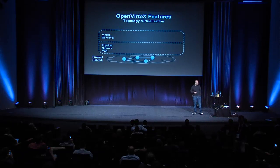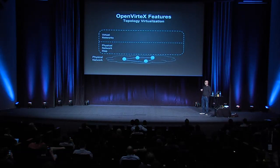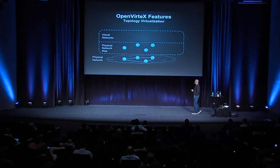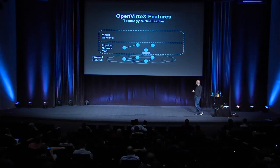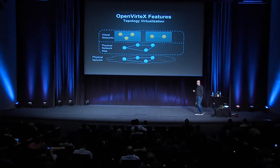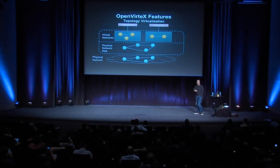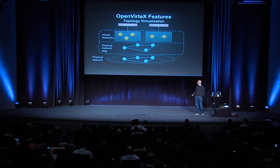For topology virtualization, OVX allows you to spawn any topology you want by decoupling the virtual network completely from the physical network. OVX discovers the topology just like any other SDN controller, eventually discovering the entire physical network. Assuming two virtual networks are configured in OVX and connected to network operating systems, those systems send LLDPs to discover the network. OVX resolves them and sends them back, allowing us to create any virtual network we want. All OVX has to do is maintain a mapping between the virtual elements and the physical elements.